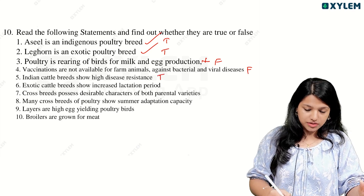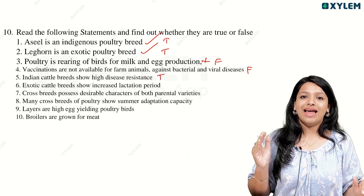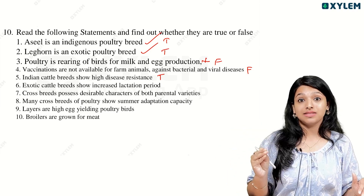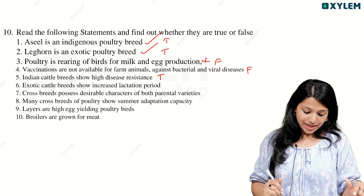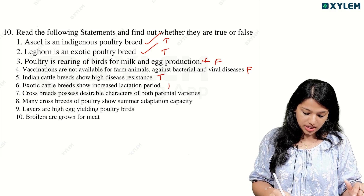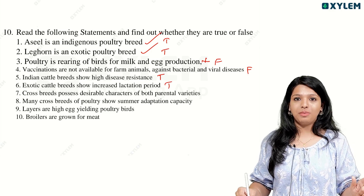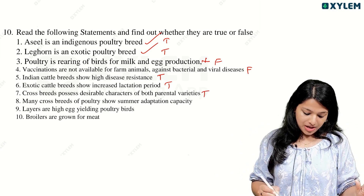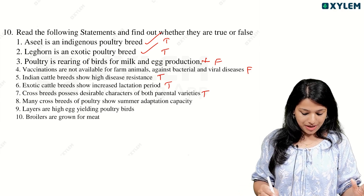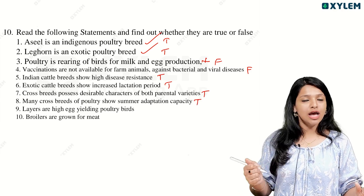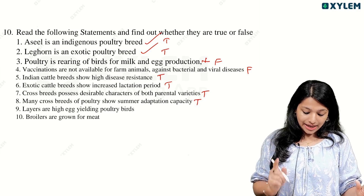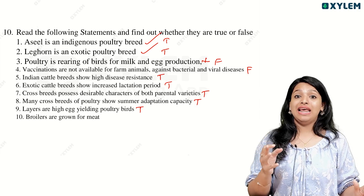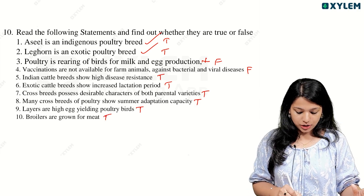Indigenous cattle breeds show high disease resistance — true. Exotic cattle breeds show increased lactation period — that is true. Cross breeds possess desirable characters of both parental varieties. Many cross breeds of poultry show summer adaptation capacity. Layers are high egg-yielding poultry breeds. Broilers are grown for meat — that is true.